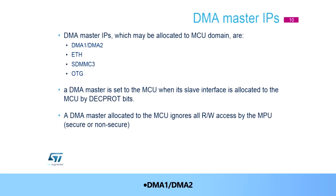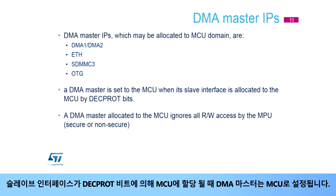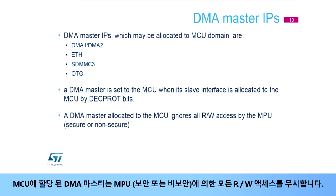DMA master IPs which may be allocated to the MCU domain are DMA1, DMA2, ETH, SDMMC3, and OTG. A DMA master is set to the MCU when its slave interface is allocated to the MCU by DECPROP bits. A DMA master allocated to the MCU ignores all read-write access by the MPU, whether secure or non-secure.